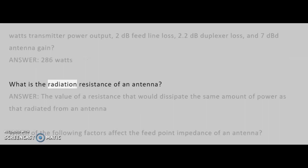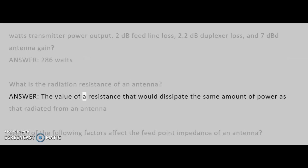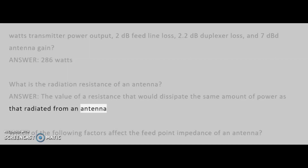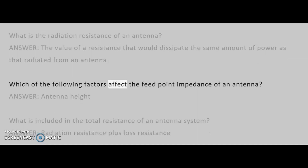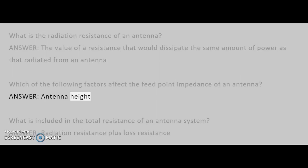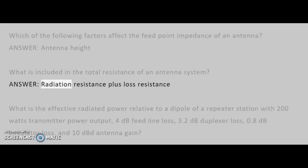What is the radiation resistance of an antenna? Answer: the value of a resistance that would dissipate the same amount of power as that radiated from an antenna. Which of the following factors affect the feed point impedance of an antenna? Answer: antenna height. What is included in the total resistance of an antenna system? Answer: radiation resistance plus loss resistance.